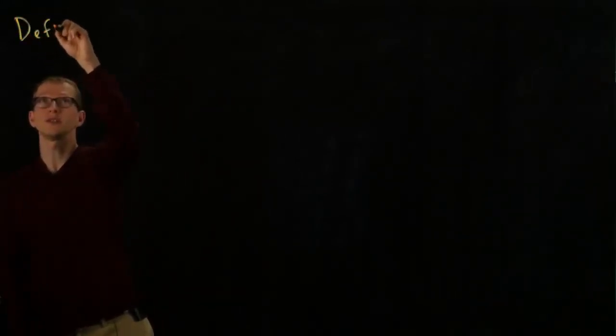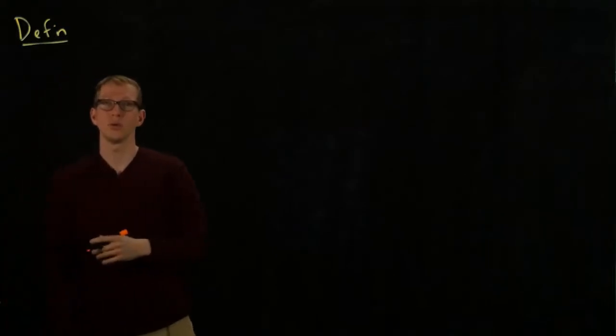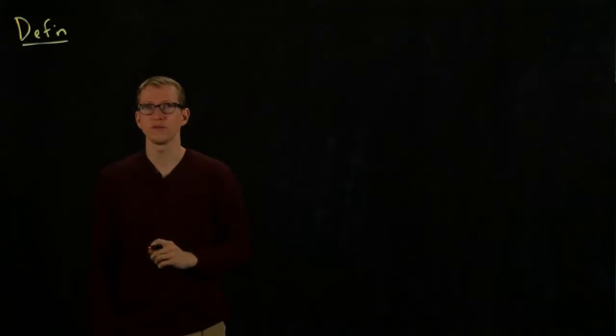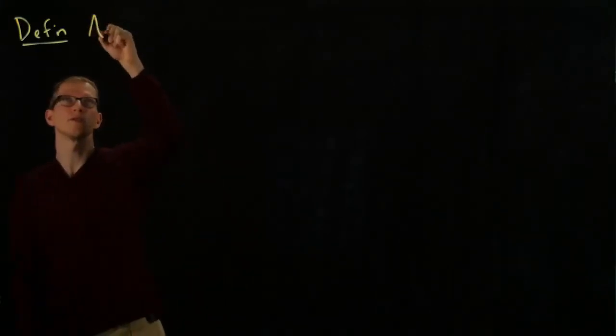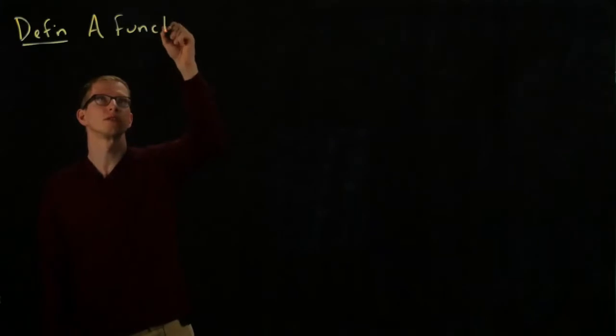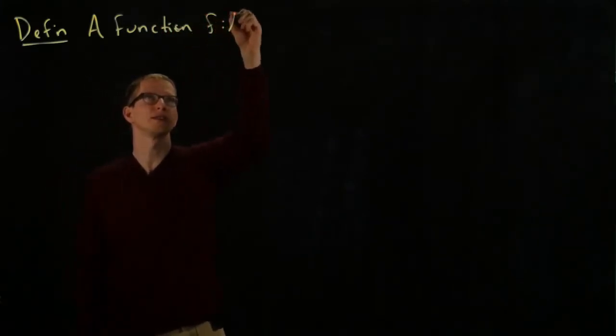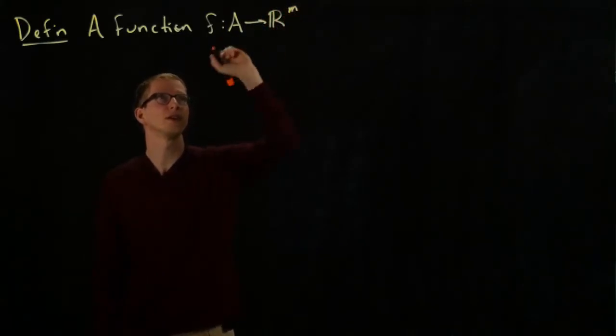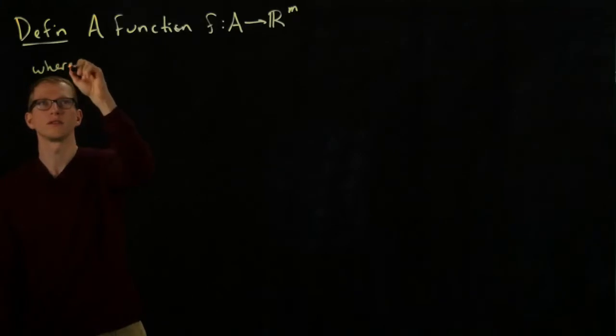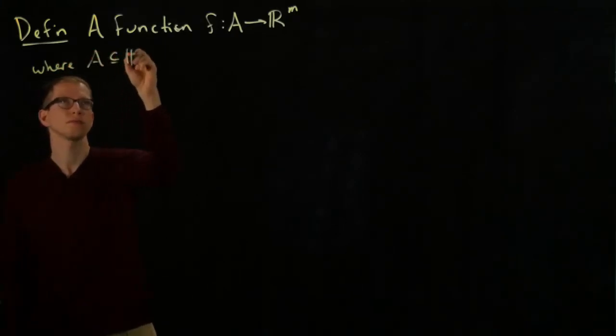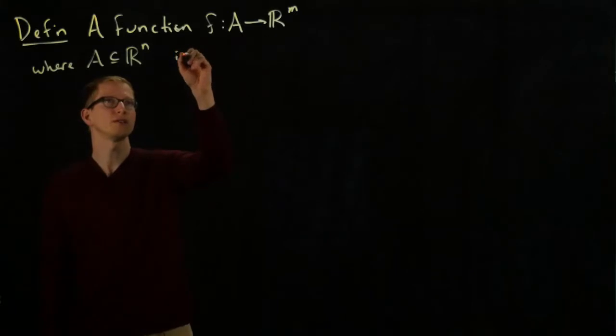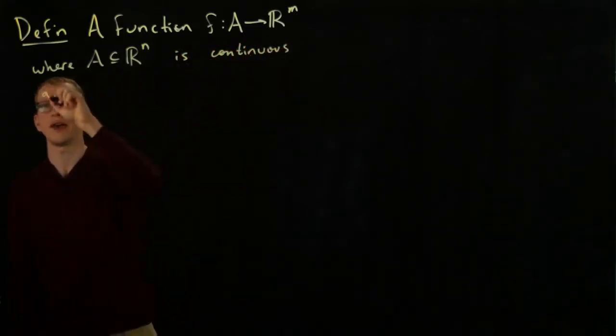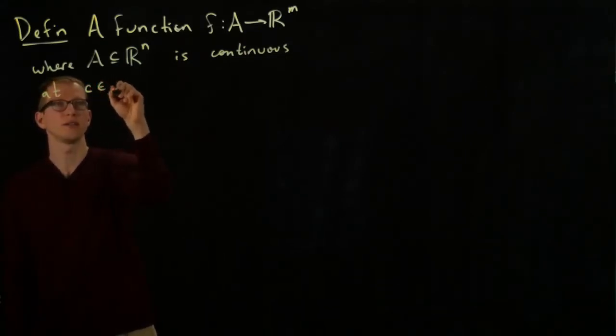So, for a definition of a continuous function, we'll actually give two equivalent definitions. The first one should seem a little bit more familiar from a first course in analysis. A function f that's defined on a domain in R^n is continuous at a point C, which is in A,